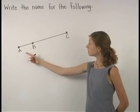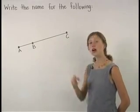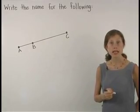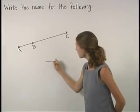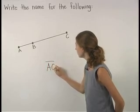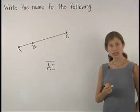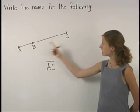So here, since A and C are endpoints of the segment, we can name the segment as segment AC. Notice that we can also name the segment as segment CA.